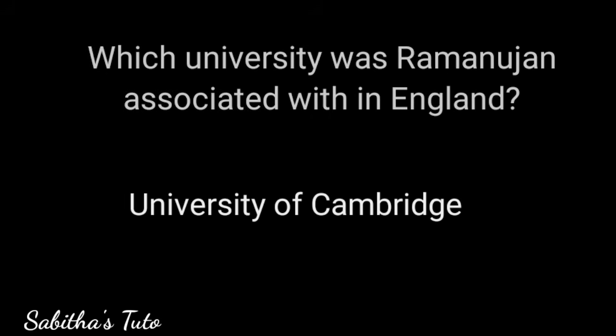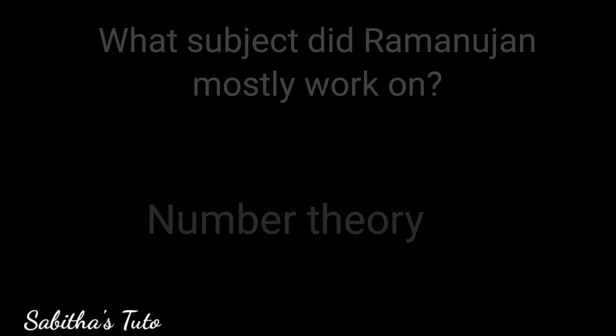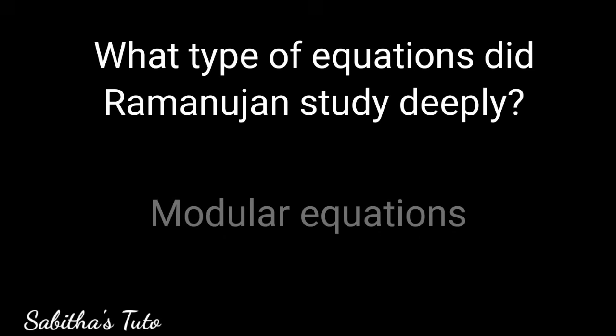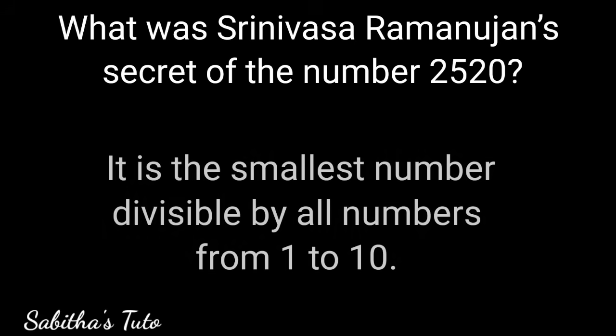Which university was Ramanujan associated with in England? University of Cambridge. What subject did Ramanujan mostly work on? Number theory. What type of equations did Ramanujan study deeply? Modular equations. What was Ramanujan's secret of the number 2520? It is the smallest number divisible by all numbers from 1 to 10.